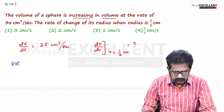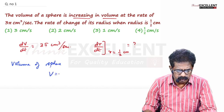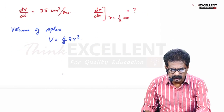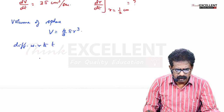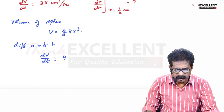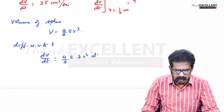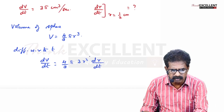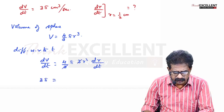Volume of sphere is V = (4/3)πr³. Now differentiating with respect to t: dv/dt = (4/3)π · 3r² · dr/dt, because we are differentiating with respect to t.